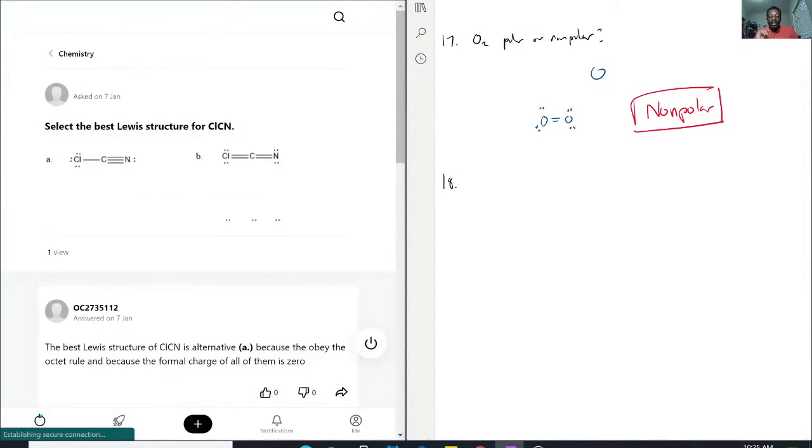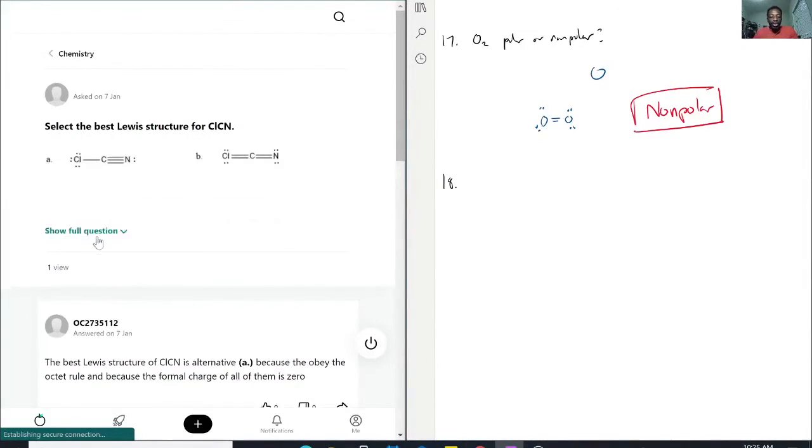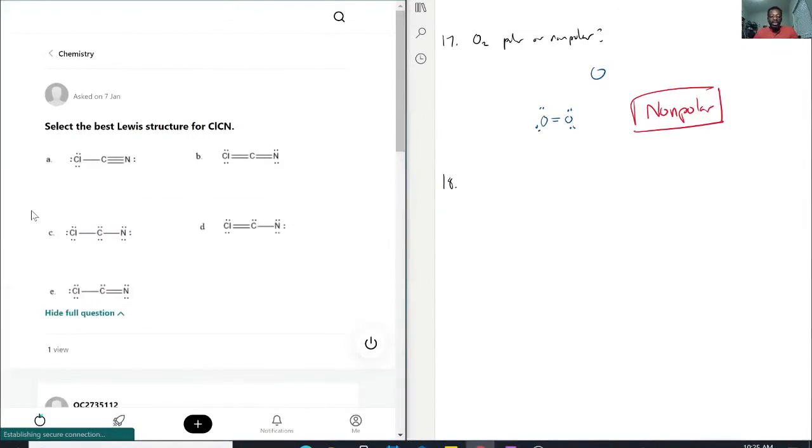We have to select the best Lewis structure for ClCN, something like chlorine cyanide. What I like to do is actually draw my own Lewis structure and then compare.